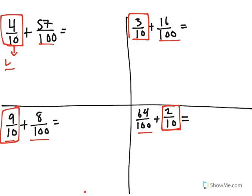Four tenths. Now, we need to have a denominator of 100. In order to do that, we're going to multiply the numerator and the denominator by 10. So, we're going to get 40 one hundredths.